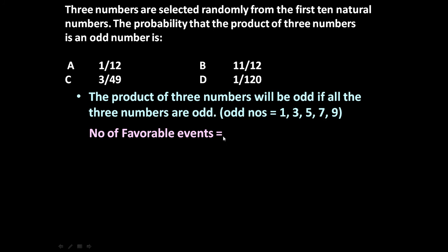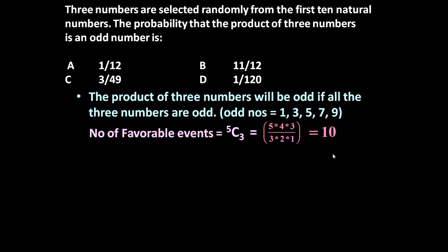Number of favorable events means we have to select 3 numbers out of these 5 odd numbers, which is equal to 5C3 = (5 × 4 × 3) / (3 × 2 × 1) = 10. So the total number of favorable events is 10.